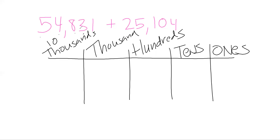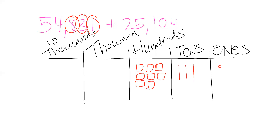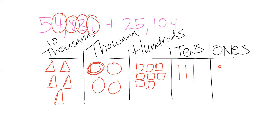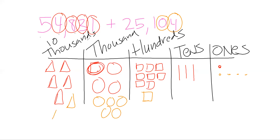Now I model. For 54,831: one in the ones place, three in the tens, eight in the hundreds, four in the thousands, five in the ten thousands. For 25,104: four ones, zero tens (nothing in the tens), one hundred, five thousands, two ten thousands.